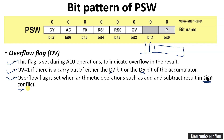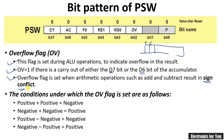The overflow flag also sets whenever there is a sign conflict in an arithmetic operation. The sign conflict cases are: positive + positive = negative (overflow sets); negative + negative = positive (overflow sets); positive − negative = negative (overflow sets); and negative − positive = positive (overflow sets). These sign conflicts arise only during signed arithmetic operations, and therefore the overflow flag is set in those cases.